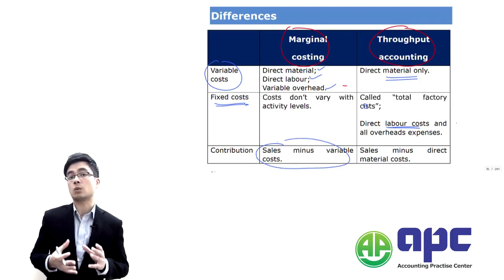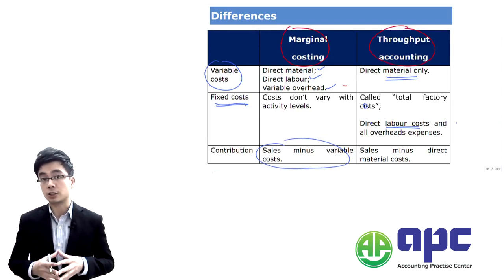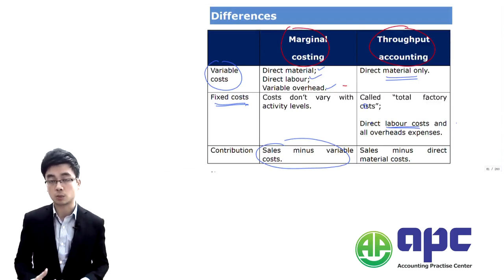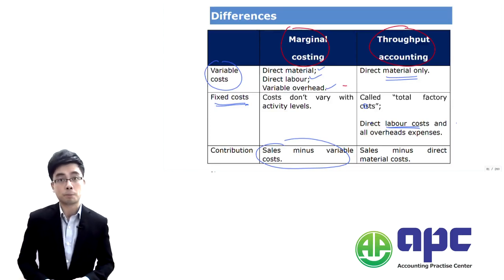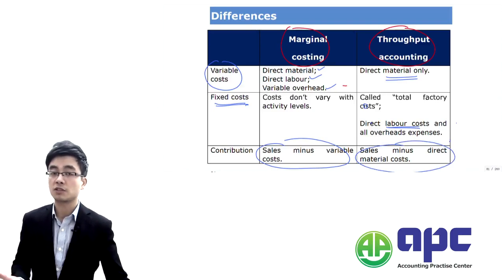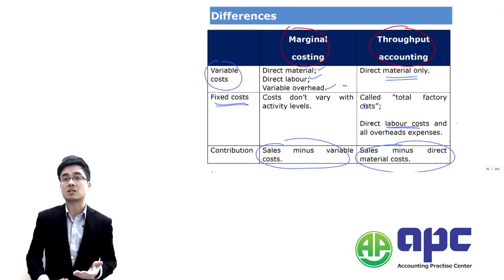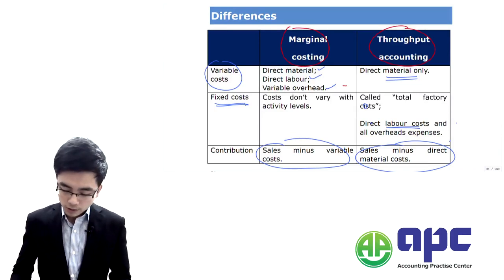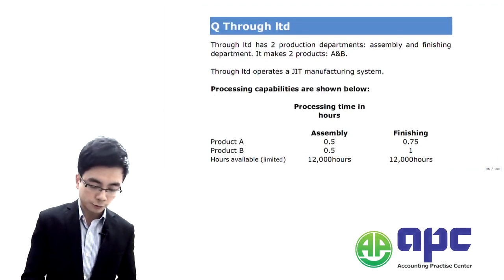The contribution under marginal costing takes sales revenue minus variable costs based on units sold. But under throughput accounting, we don't call it contribution — we call it the return. The return takes sales revenue (selling price × units sold) minus only direct material costs times units bought rather than sold. This is a slight modification based on marginal costing that helps management make better decisions by taking into account bottleneck resources in a company.